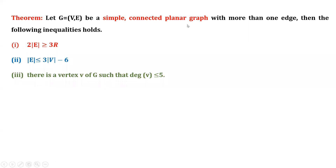If a graph is a simple connected planar graph, then we have these three inequalities: number one, 2 times the number of edges is greater than or equal to 3r; number two, the number of edges is less than or equal to 3v minus 6; and number three, there exists a vertex v of G such that the degree of v is less than or equal to 5. This theorem only signifies that if a graph is a simple connected planar graph, then these three inequalities hold, but you can't use this result conversely.